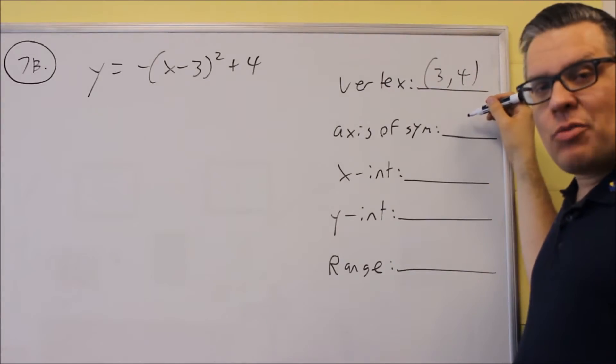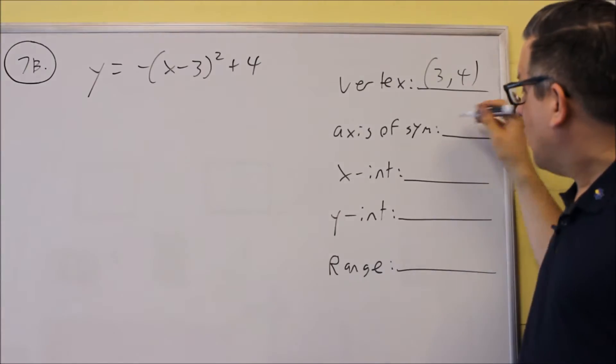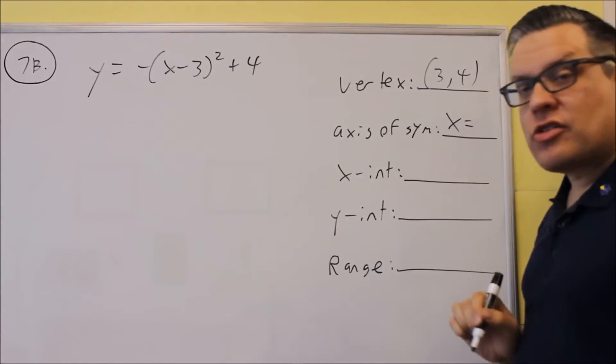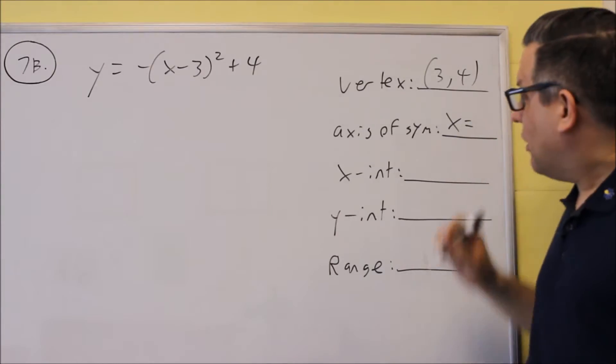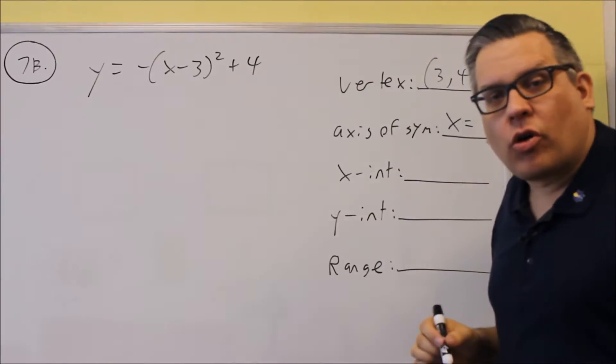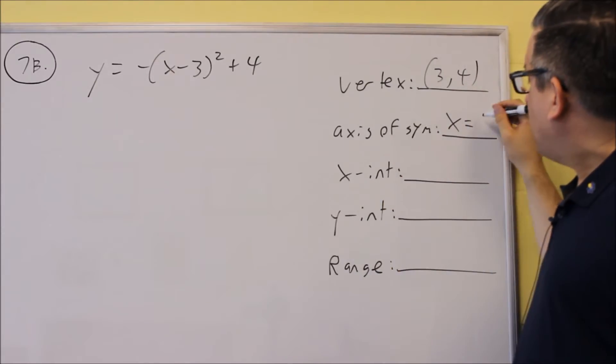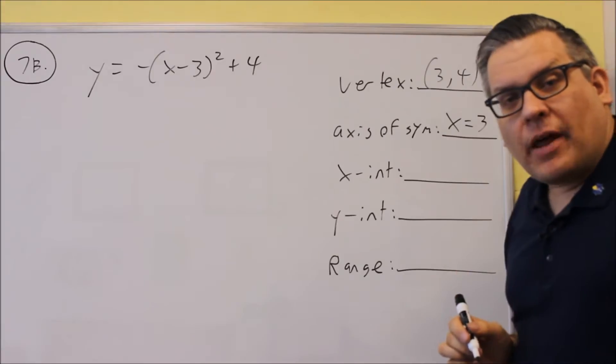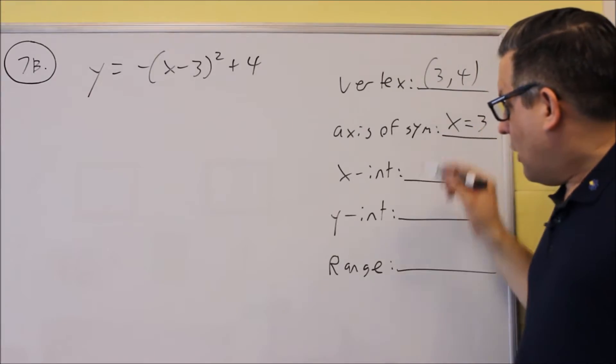Okay, we know automatically your axis of symmetry as well once we find the vertex. Remember, axis of symmetry always starts with x equals no matter what. It's equal to the x coordinate of your vertex, always. So I'm going to put x = 3. That would be your axis of symmetry.